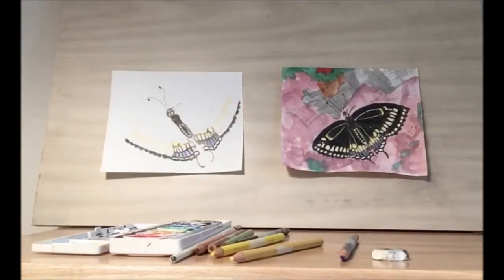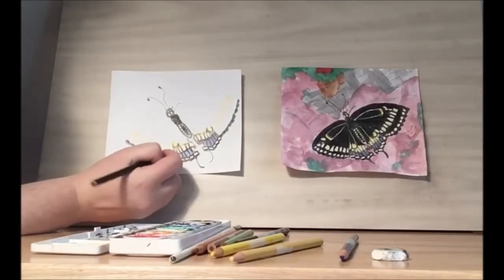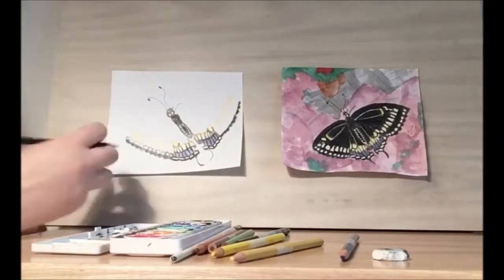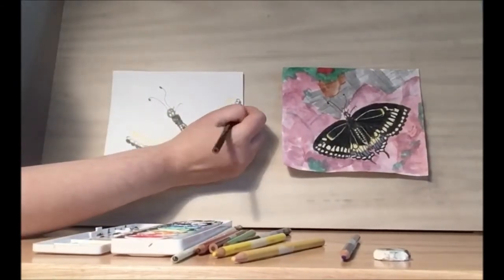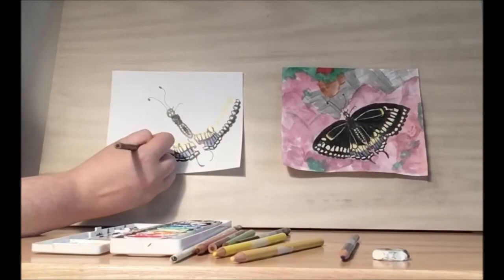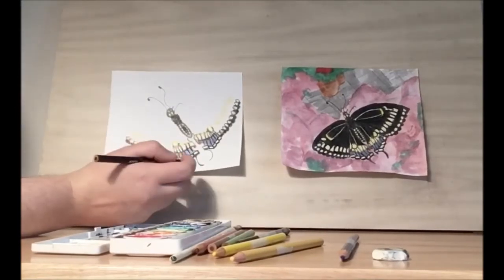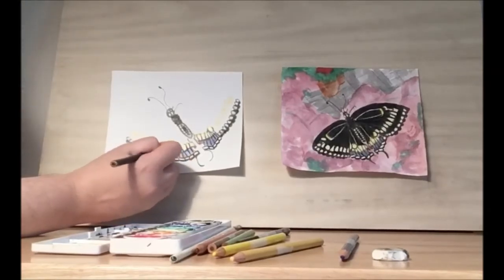Once you have your scalloped edge, then let's go and draw circles around our circles. Once you have your circles done, then you can go in and draw this line.